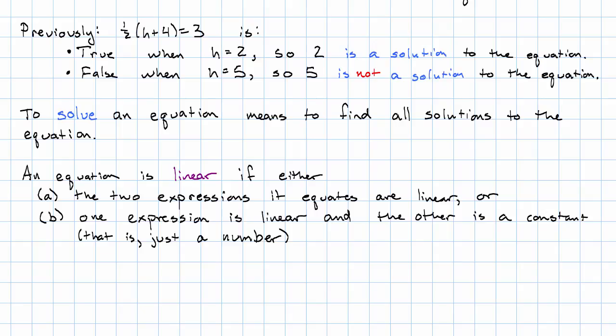An equation is linear if either it has two linear expressions that it says are equal, or it has one linear expression equaling a number. So for example, 3x plus 4 equals 7, or 2x minus 5 equals 6x plus 8.